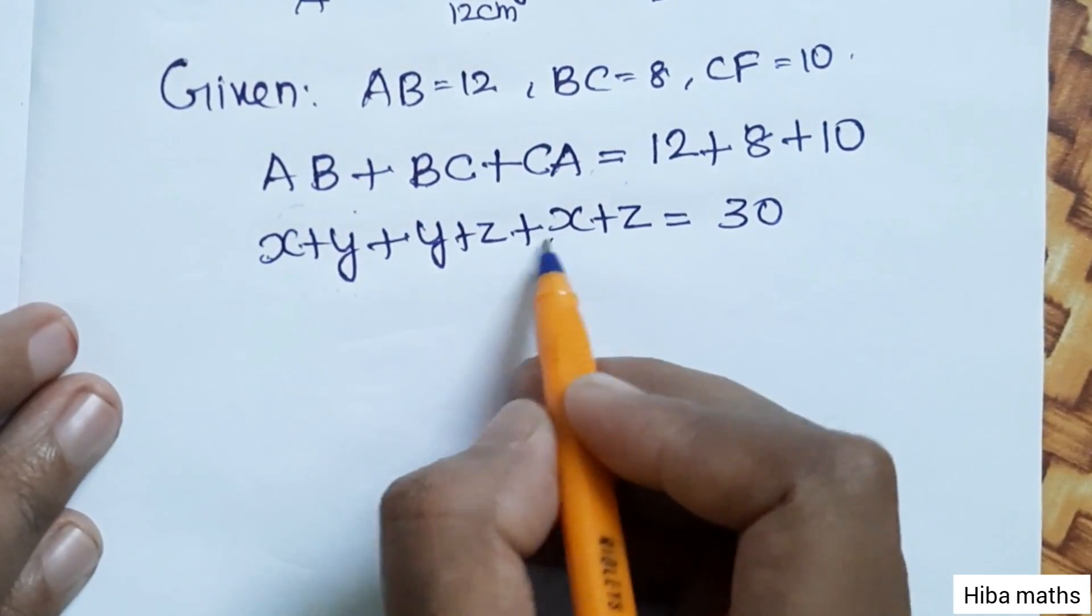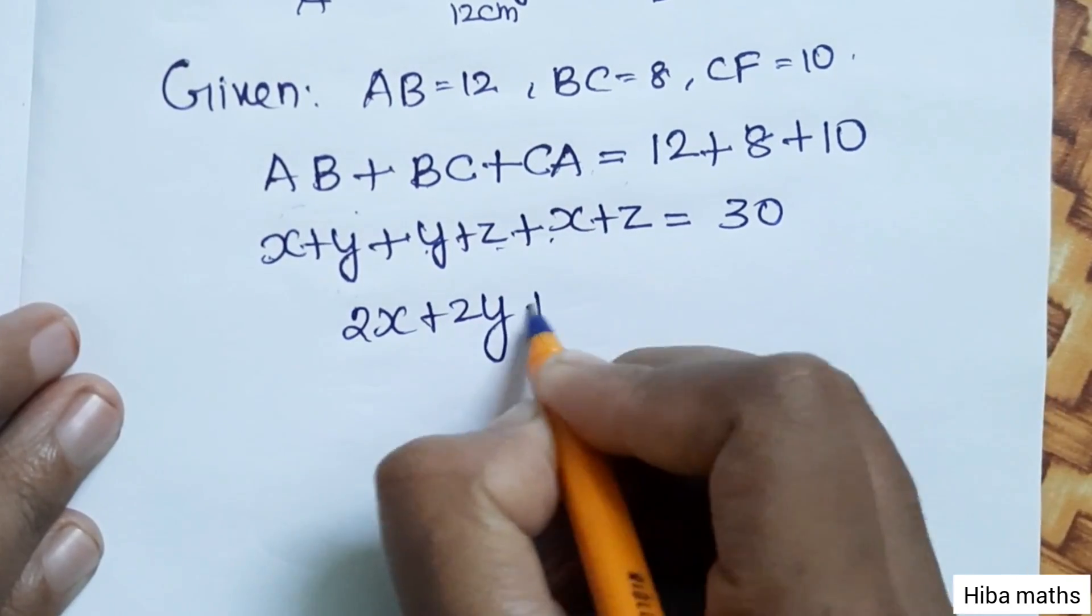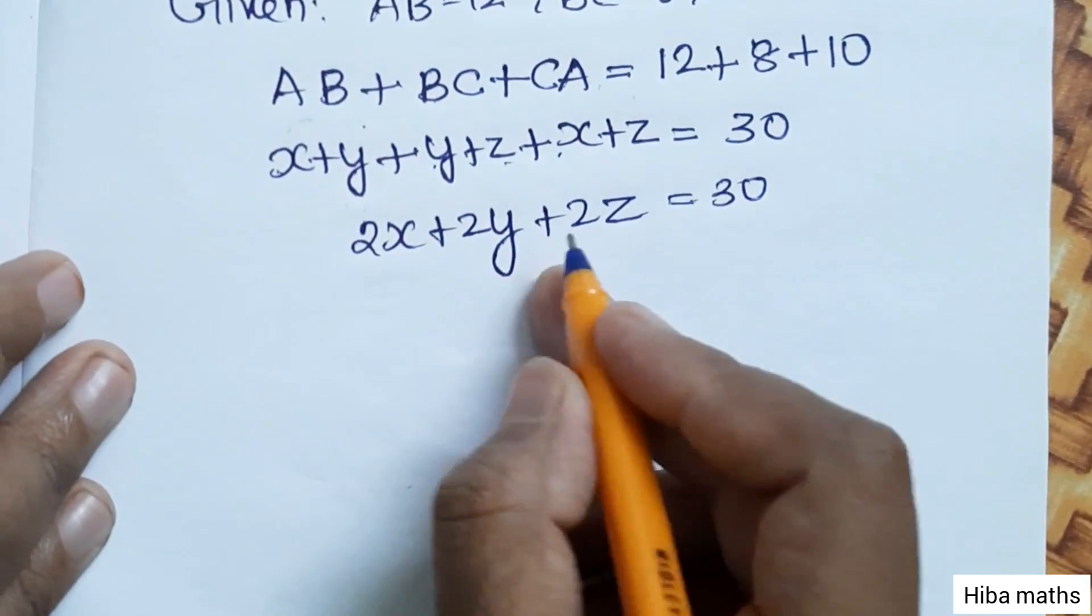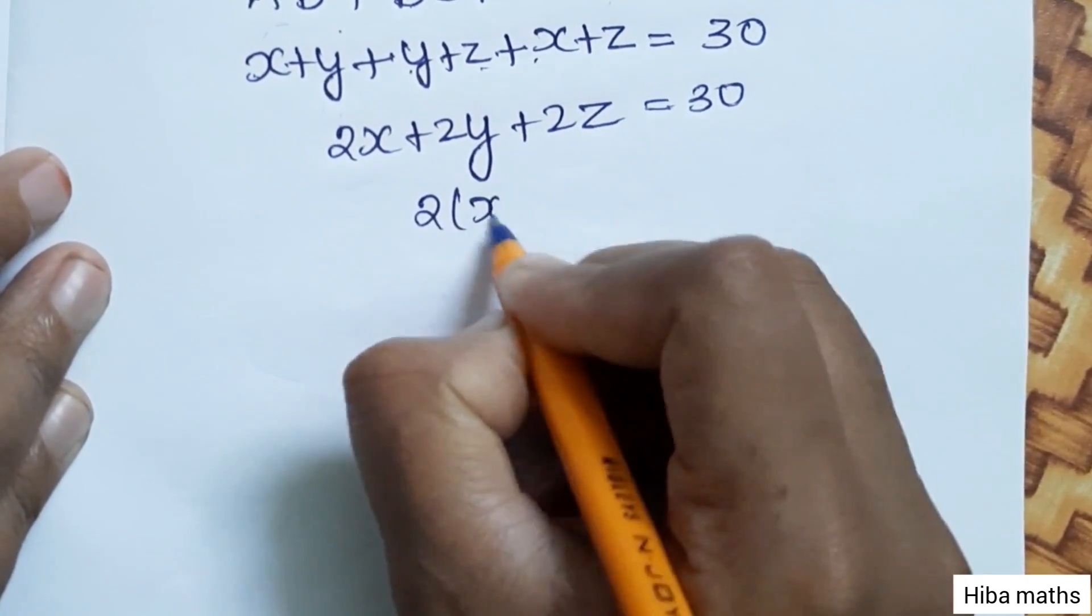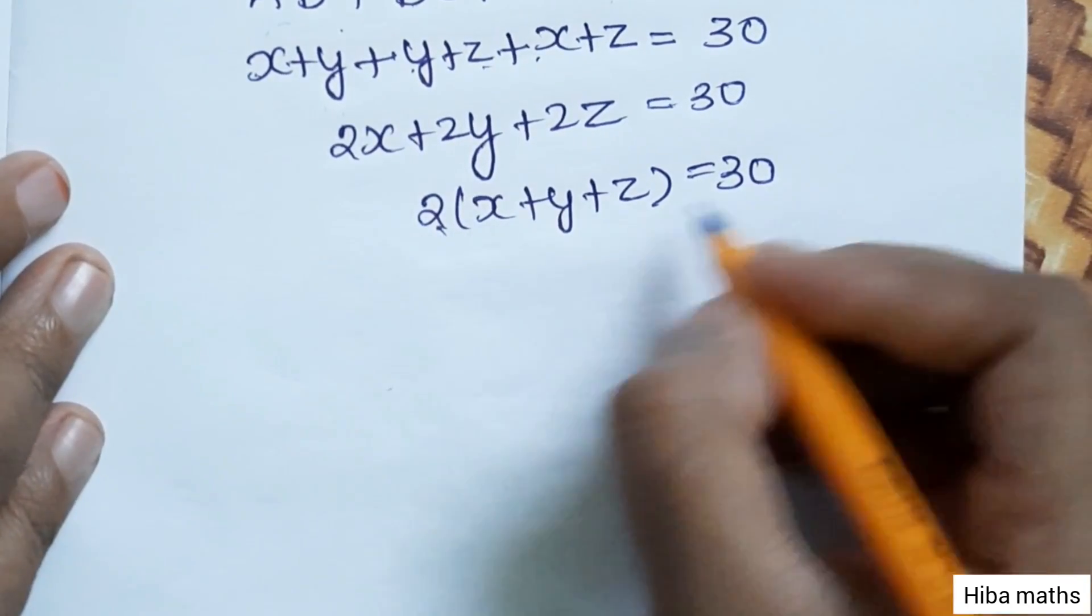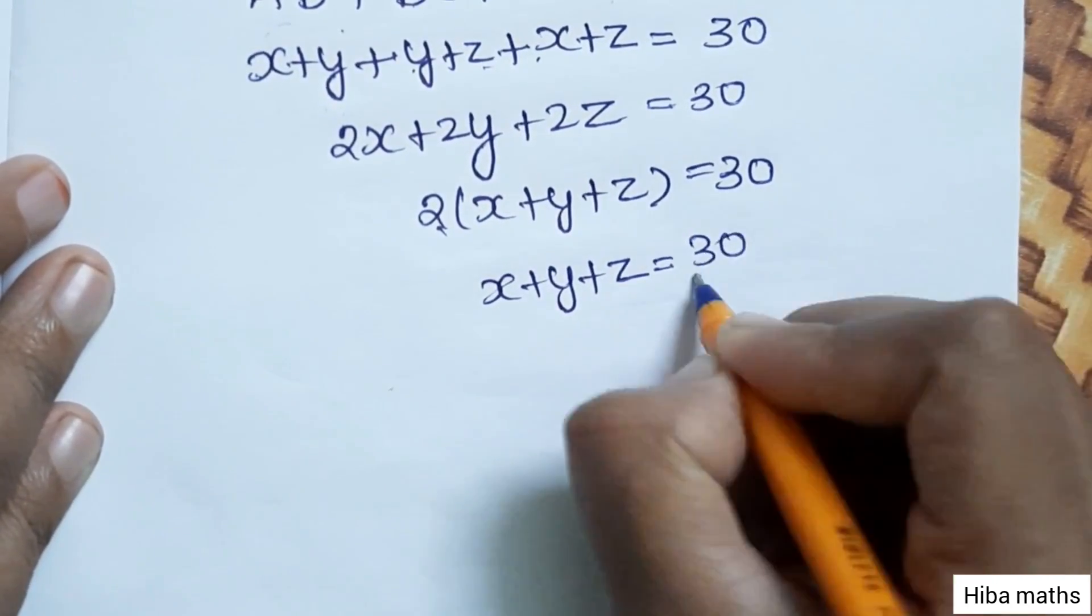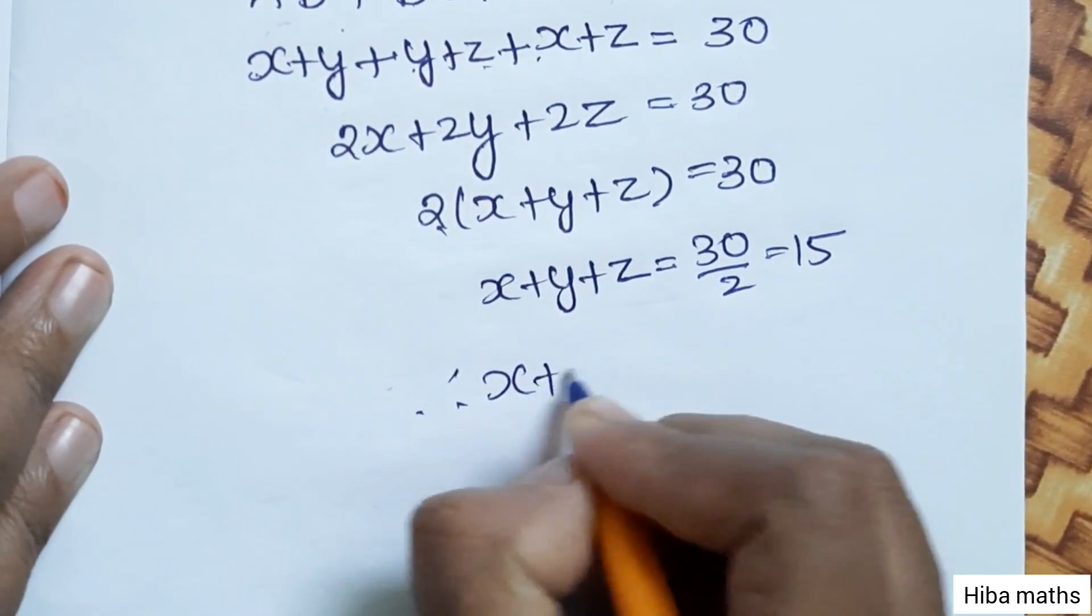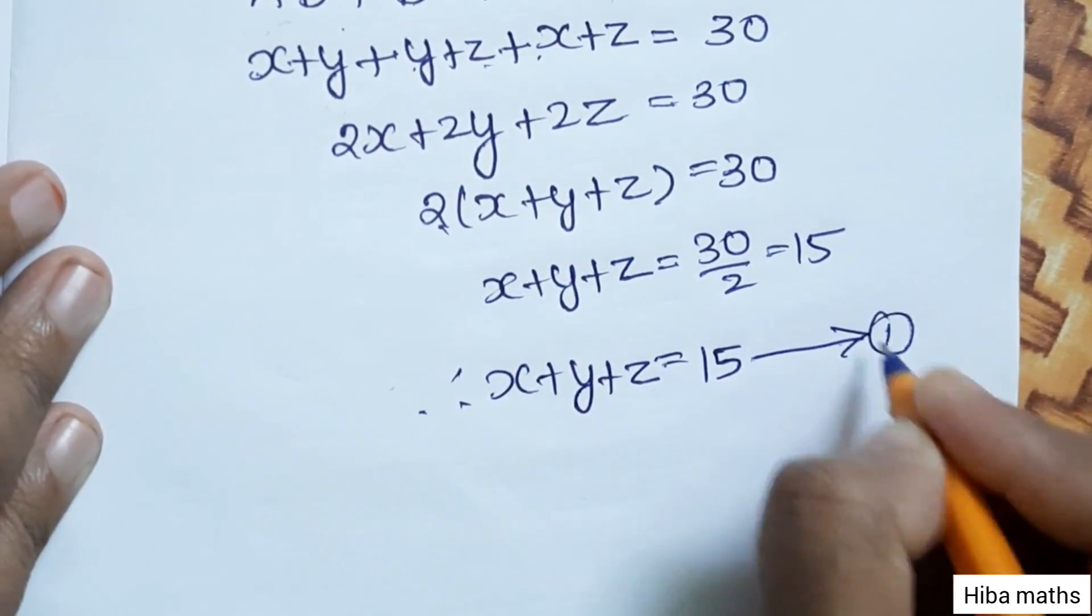Now 2x, 2y, 2z equals 30. We can take 2 out by factoring: 2 times x plus y plus z equals 30. Dividing both sides by 2 gives 15. Therefore, x plus y plus z equals 15. This is the first equation.